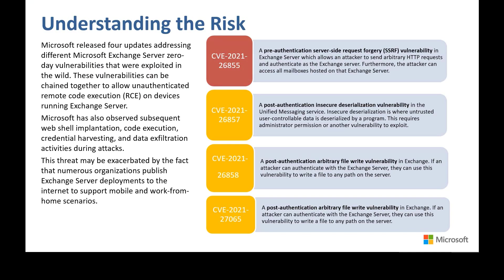Earlier this year, security researchers responsibly disclosed the existence of vulnerabilities in Exchange Server to Microsoft. These vulnerabilities were being exploited by a nation-state actor, which Microsoft refers to as Hafnium. Exchange Server 2019, 2016, and 2013 were found to all exhibit these vulnerabilities. Exchange Server 2010 was also found to exhibit CVE-2021-26857, but only if the Unified Messaging Service is installed. Exchange Online does not have these vulnerabilities.